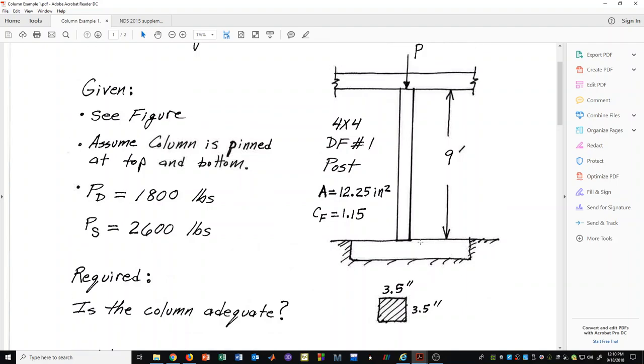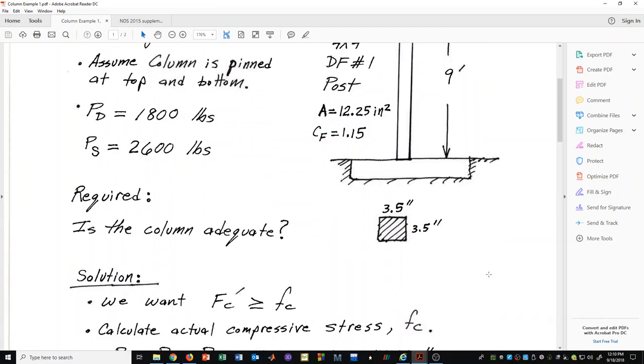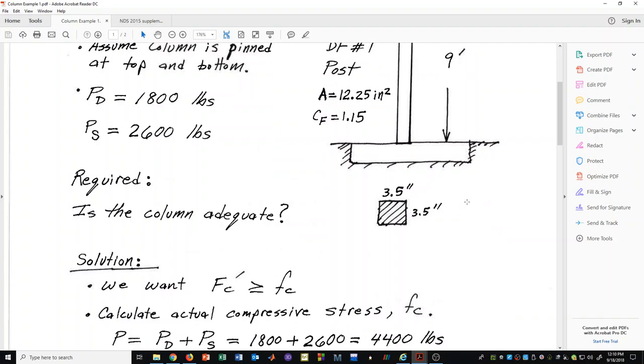If we went to the table of section properties and looked at the cross-sectional dimensions of this column, we would see that it is really a 3.5 inch by 3.5 inch cross-section post. Keep that in mind as we proceed.